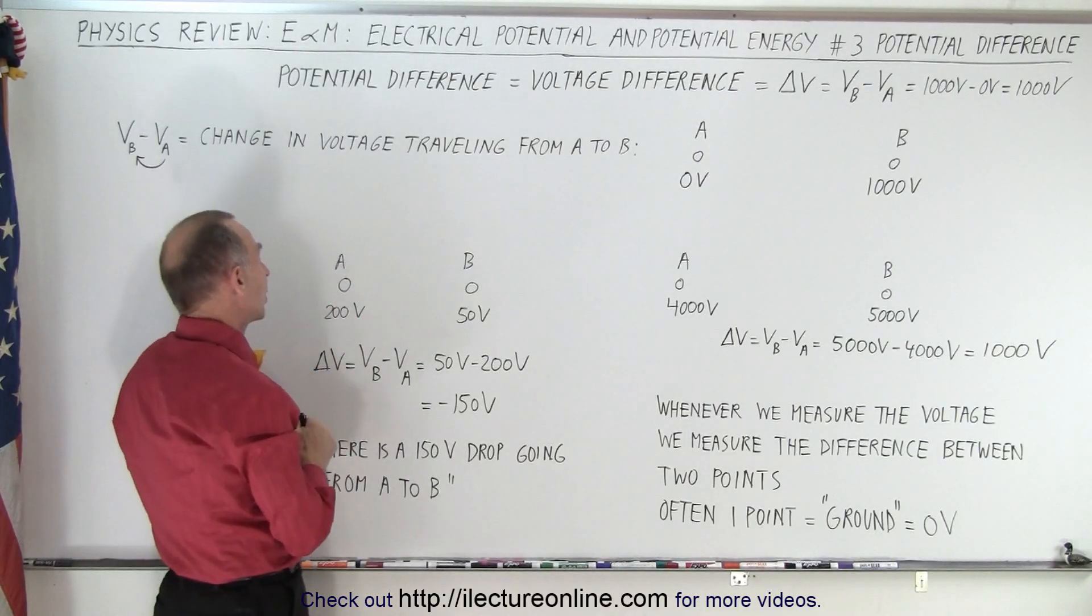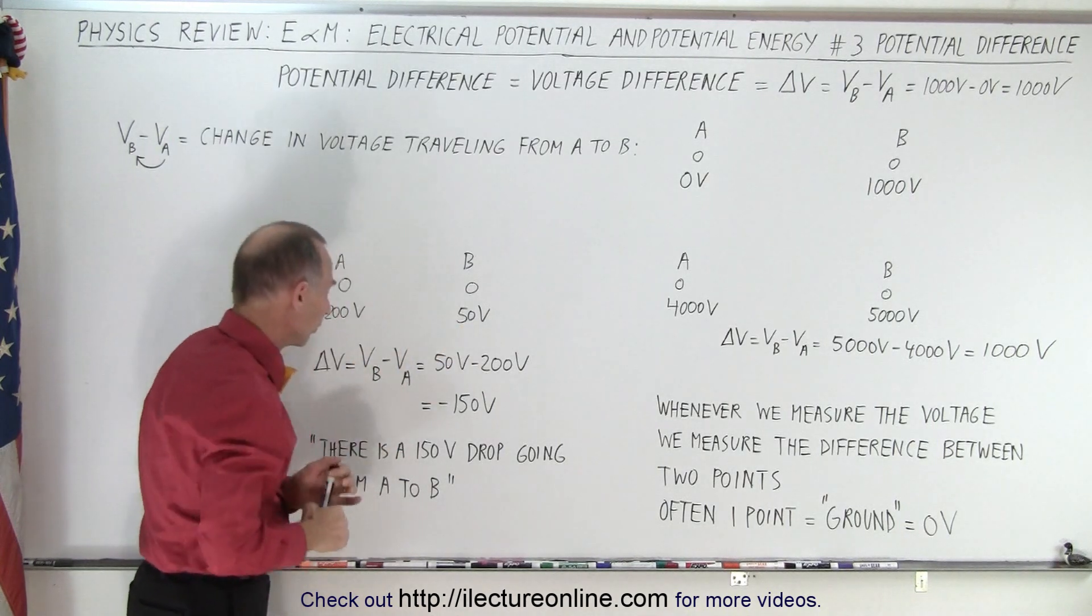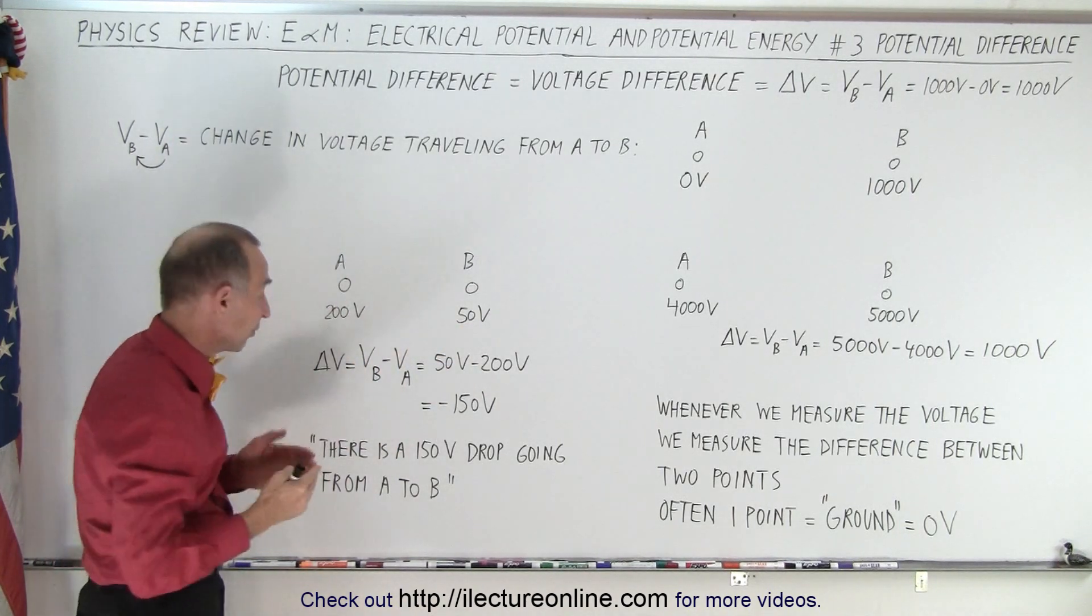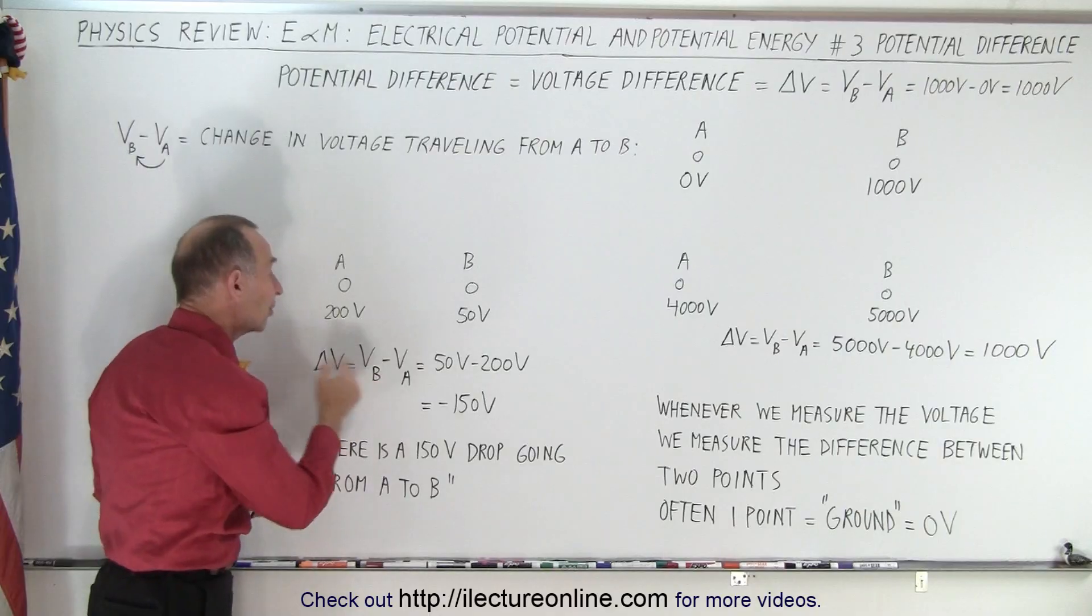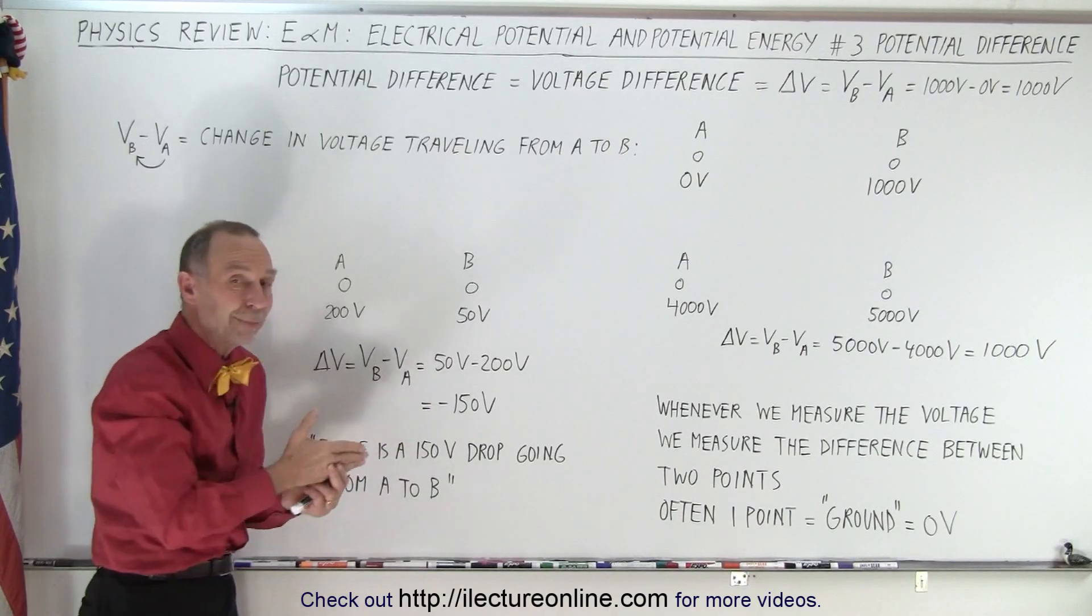So let's say we have another example here. Let's say we have A and B. A is at 200 volts and B is at 50 volts. And now we're going to measure the difference but now we say VB minus VA. In other words, we start at A and we move to B and what is the potential difference?